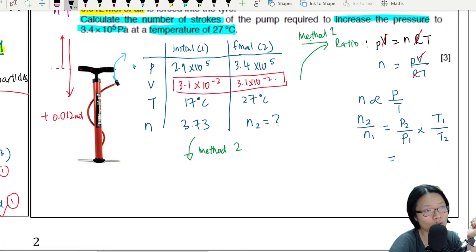Okay, so now we are looking for n2. Where is our n1? 3.73. Okay, final pressure is higher because we add air.